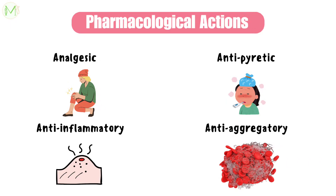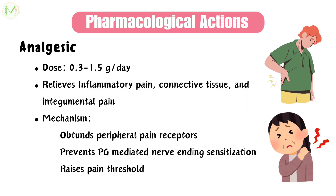Starting with the analgesic property of aspirin, it should be taken at 0.3–1.5g per day dosage for its analgesic action. At this dose, it relieves inflammatory pain, tissue injury related pain, connective tissue pain, and integumental pain. It does all these by obtunding peripheral pain receptors and by preventing prostaglandin-mediated nerve-ending sensitization.